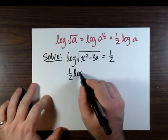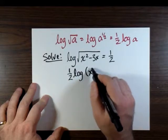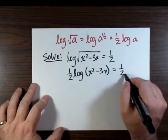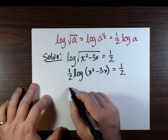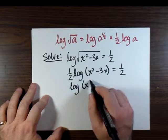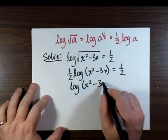So log of the square root of x squared minus 3x becomes a half times the log of x squared minus 3x without the square root. This is still equal to 1 half. We can now divide both sides by 1 half and we get log of x squared minus 3x equals 1.